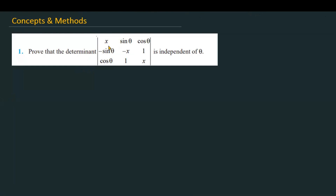The question is: prove that the determinant whose first row is x, sin theta, cos theta; the second row is minus sin theta, minus x, 1; and the third row is cos theta, 1, and x — is independent of theta.